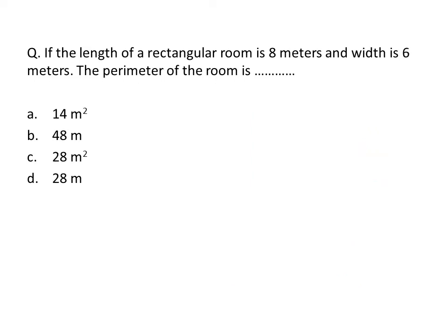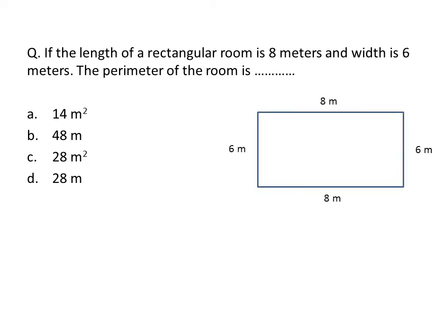Next question: if the length of a rectangular room is 8 meters and width is 6 meters, find the perimeter of the room. We know the perimeter means the sum of all four sides. One pair of sides is the length and the other pair is the width. The perimeter formula is: length + width + length + width, which simplifies to 2×length + 2×width. Substituting: 8 + 6 + 8 + 6 = 28. The unit is meters.